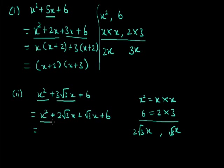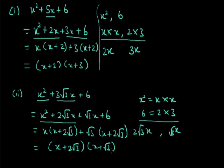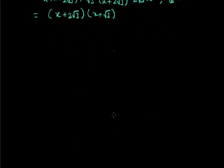From the first two terms we take x common, giving x(x + 2√3). From the next two terms we take √3 common, giving √3(x + 2√3). Now among these two terms we take (x + 2√3) as common, leaving (x + √3). So the factorization is (x + 2√3)(x + √3). This completes the factorization by splitting the middle term.